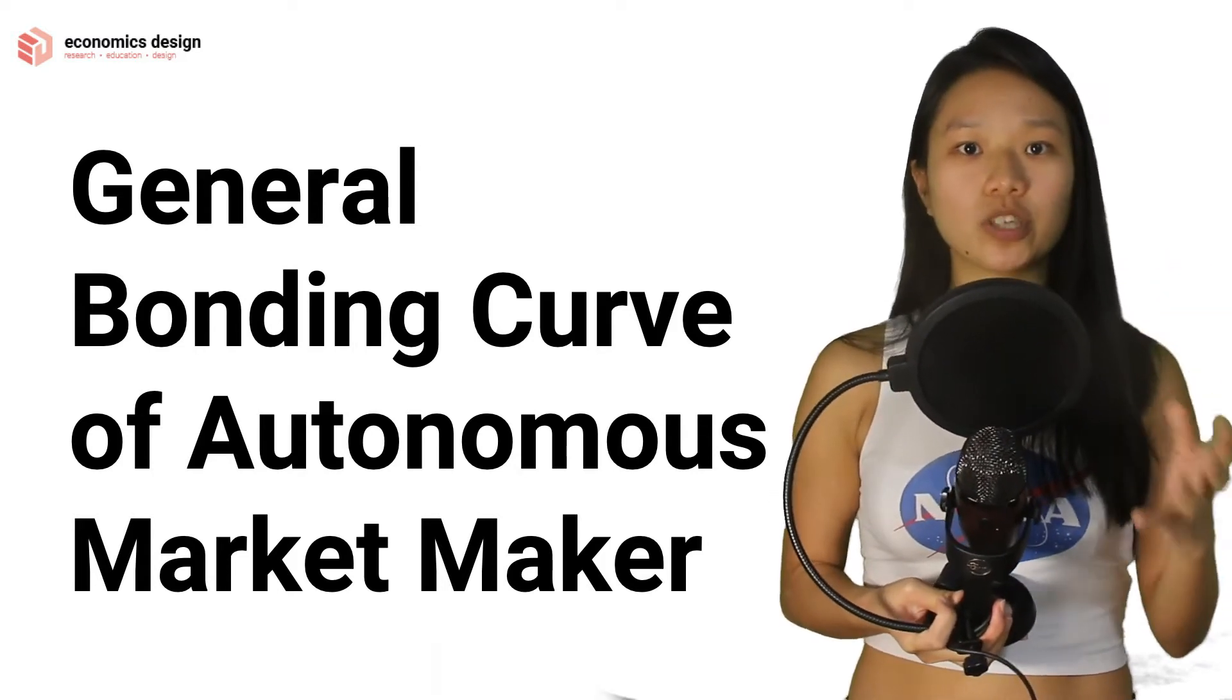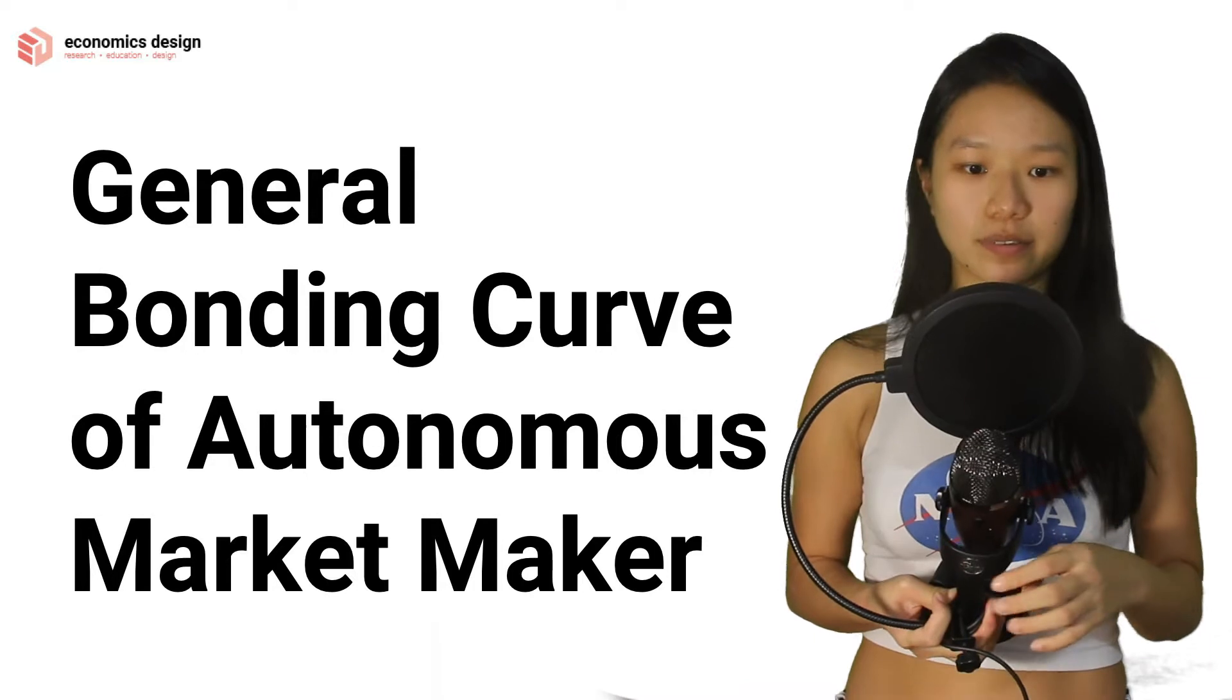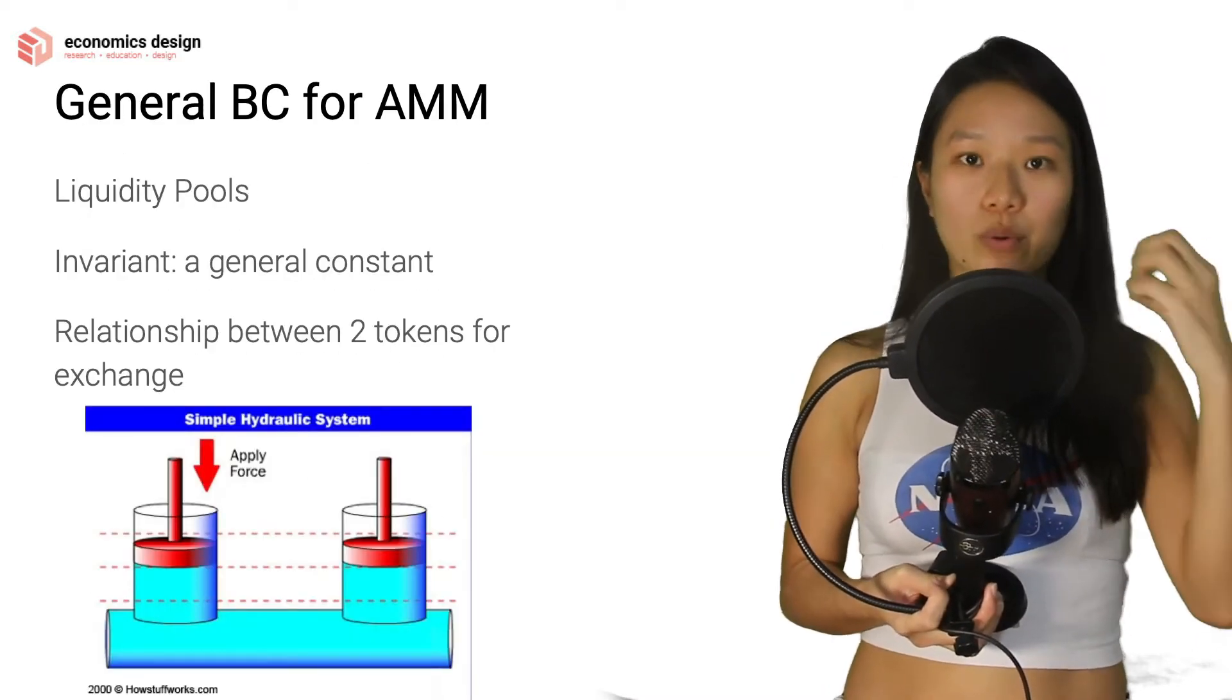Let's start with a general bonding curve for automated market makers. Firstly, you have to think about liquidity pools.